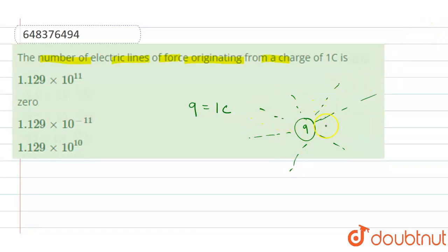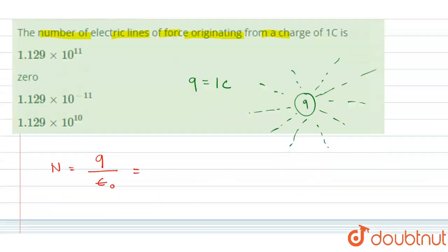From this charge, the number of electric field lines N is given by the formula N = q/ε₀, where ε₀ is the permittivity of free space.